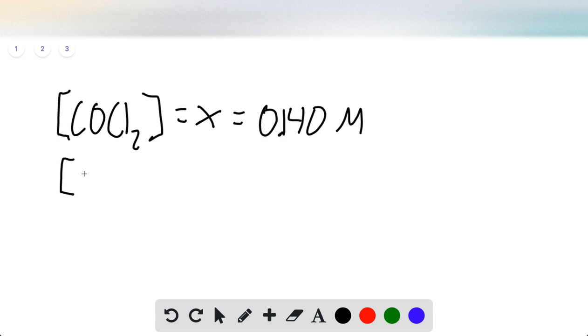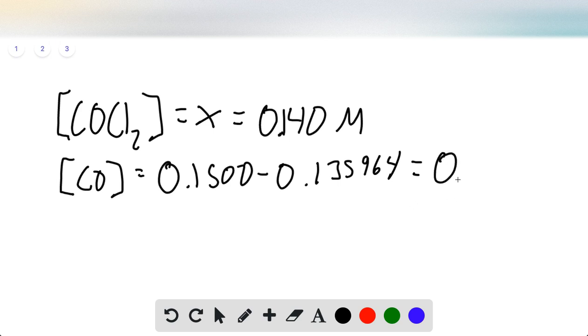Our concentration of CO is 0.1500 minus 0.135964. Again, including the sig figs so that this final answer is more accurate, and that gives us 0.014 molar.